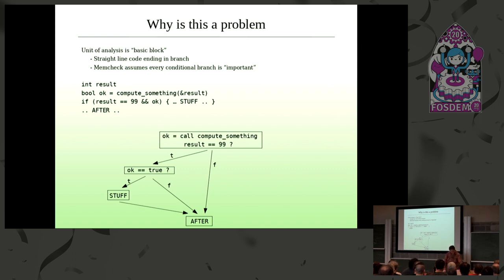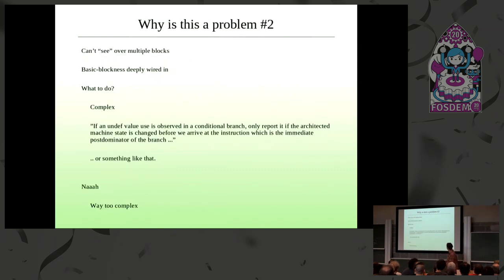So I wasn't really sure what to do. Yeah. The problem is, essentially, Memcheck can't see over multiple basic blocks. And that assumption is deeply wired into the architecture of all of Valgrind, that it's essentially a basic block at a time, JIT, an instrumentation system. So what was I going to do? Well, I wasn't really sure.